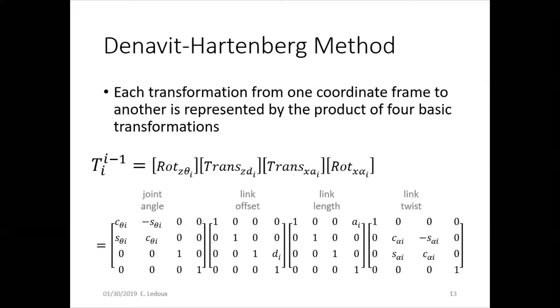The transformation matrices for each of those - you can see since Z is the joint axis, then we will have a rotation around Z first and then a translation in the Z direction. Next, we'll have a translation in the X direction, which is along the link, and a rotation around that axis.